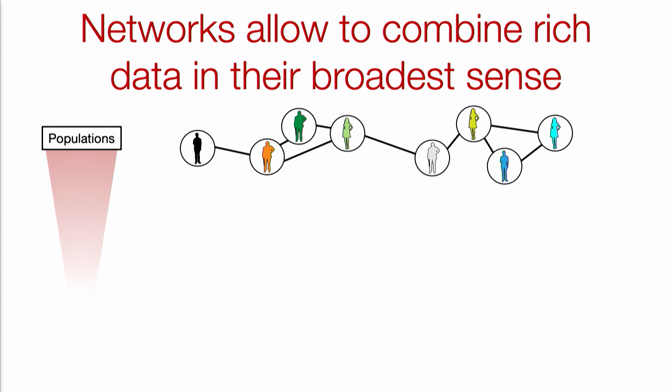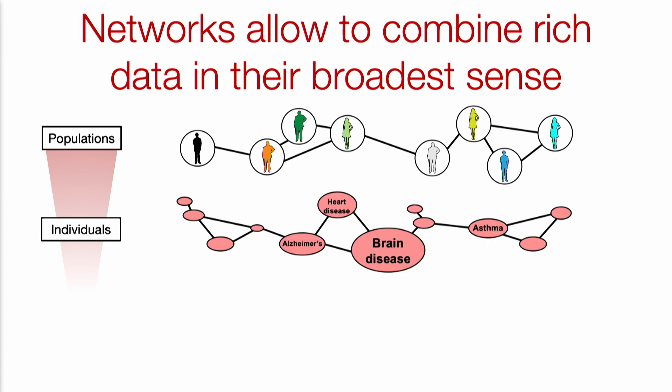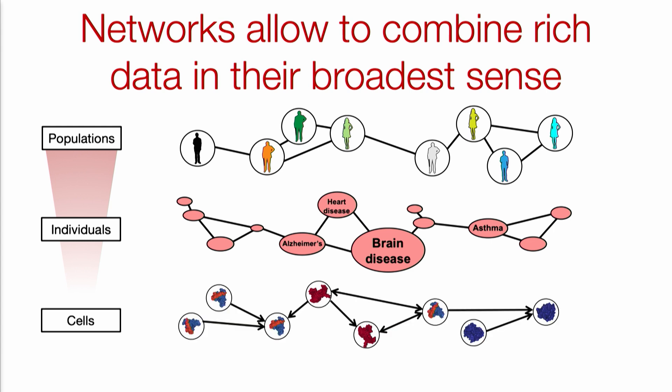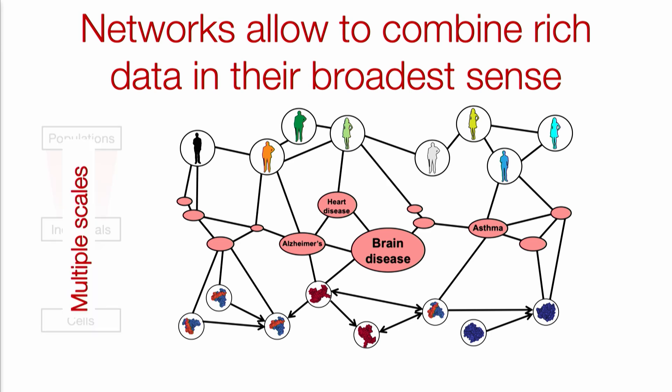In my research, we think of networks or graphs as a very general mathematical language that helps us tackle the first challenge: being able to combine data at multiple different levels — from how individuals interact within a society, down to what kinds of diseases exist within a particular individual, and down to a cell where different molecular components interact to achieve a particular goal. What is nice about networks is that we can connect these different scales so that you get a multi-scale model containing very rich and multimodal data.